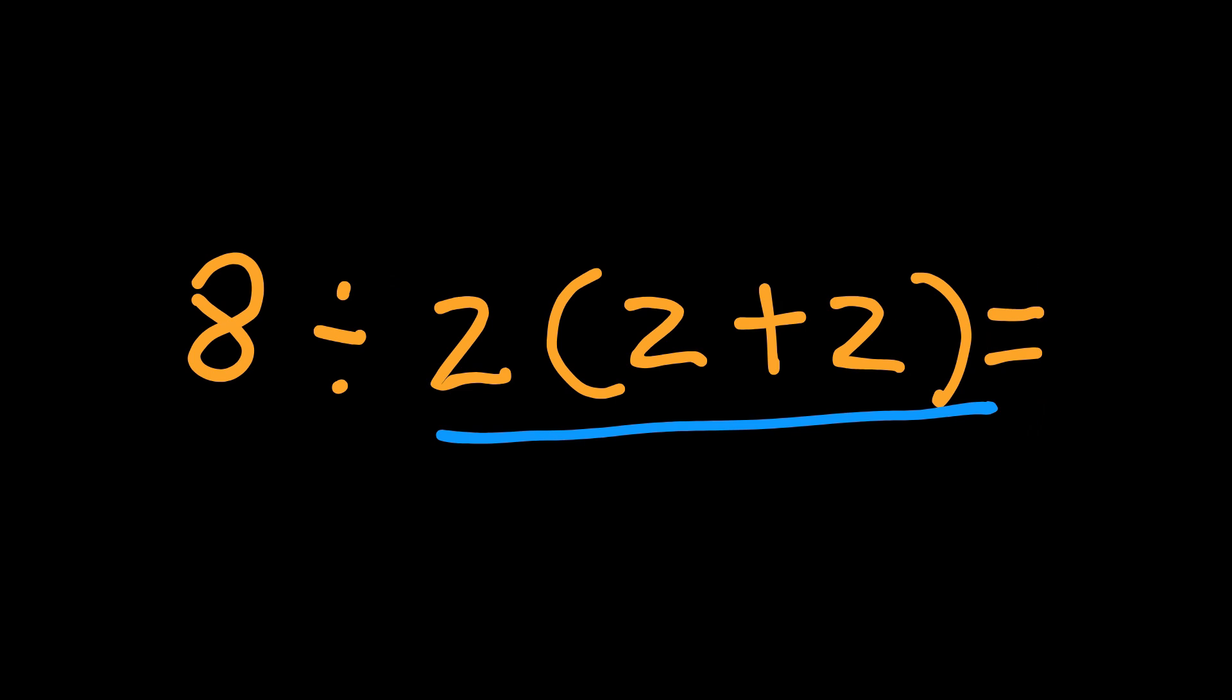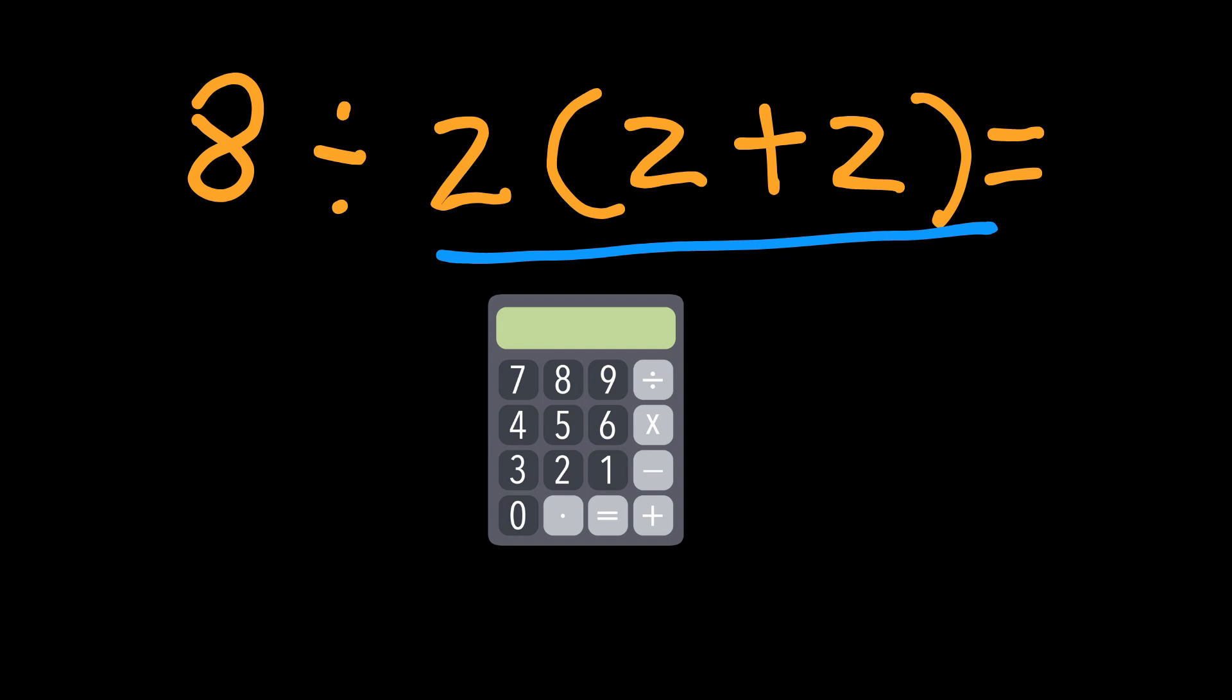But that's not what's written. The original expression has no grouping around 2 parenthesis 2 plus 2 parenthesis. So, we follow the normal PEMDAS rules with left-to-right multiplication and division. Still not convinced. And I swear a lot of people will get to this part and they will still argue that the answer is 1.